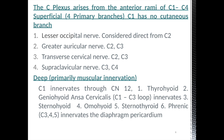C1 innervates through cranial nerve 12, the hypoglossal, to the thyrohyoid muscle and geniohyoid muscle — these are suprahyoid muscles. The thyrohyoid is a very small muscle between the thyroid bone and hyoid bone, and the geniohyoid is between the mandible and hyoid bone. These are supplied through the hypoglossal nerve, which supplies the tongue — the 12th cranial nerve. So C1 actually has no independent nerve root; these are fibers traveling by hitchhiking through the cranial nerve.